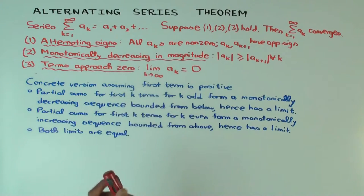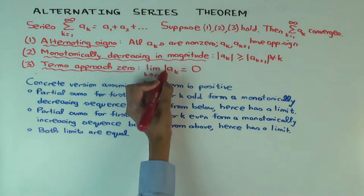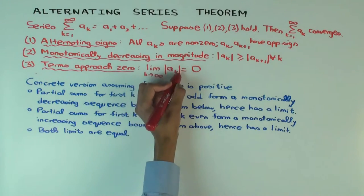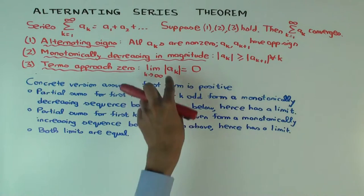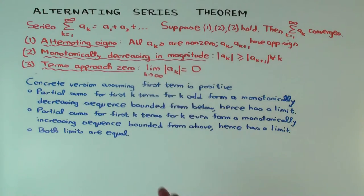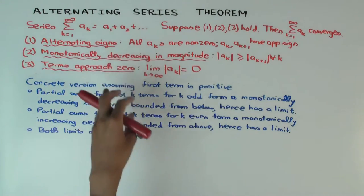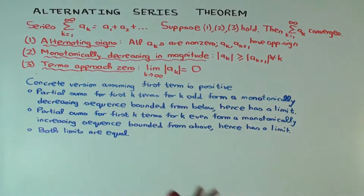The final condition is that the terms approach 0. So the limit as k approaches infinity of a_k is 0, which is the same as saying that the limit of the absolute value is 0. So if all three conditions are satisfied, then the series converges.